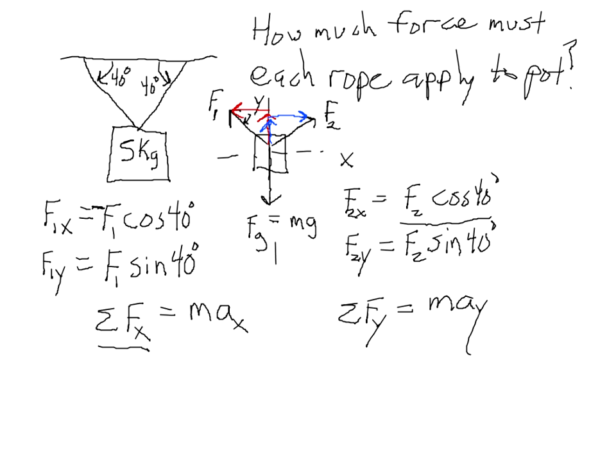So we have this one, F2 cosine 40 in the positive x direction. It would be fine to go ahead and use your calculator to find the cosine of 40 and put that in as a number. I'm not doing that. I'm just carrying it through with cosine 40, which is also okay.